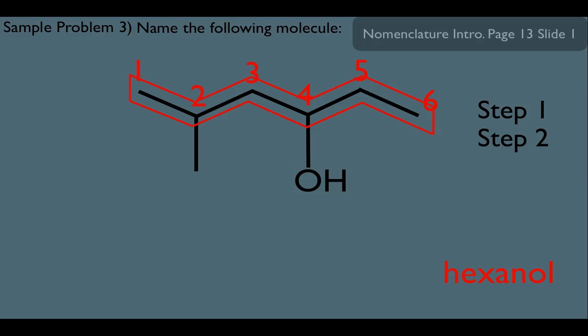whereas if we numbered from right to left, we would get a substituent on 3 and 5. So, we stick with this numbering right here, and it brings us to step three.